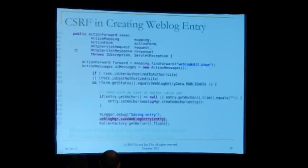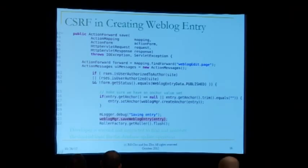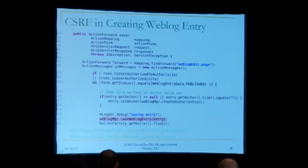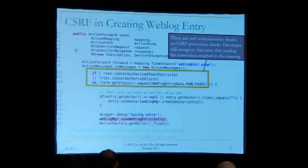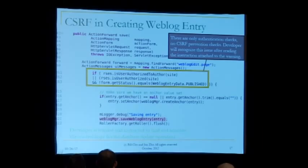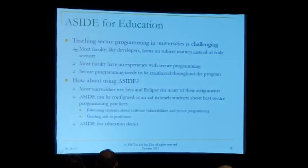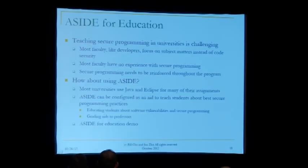Here is an example — this is actual code. You can see this 'weblog save' web entry point — this is when Roller commits the web entry into the database. At that point, with the red flag, we say: where's your CSRF protection? The developer looks at this and says, 'I checked for authentication, but I didn't check for CSRF.' Hopefully somebody would have thought about it and added CSRF protection. Of course, we can't ensure whether it's added correctly, but at least they would have to think about it.